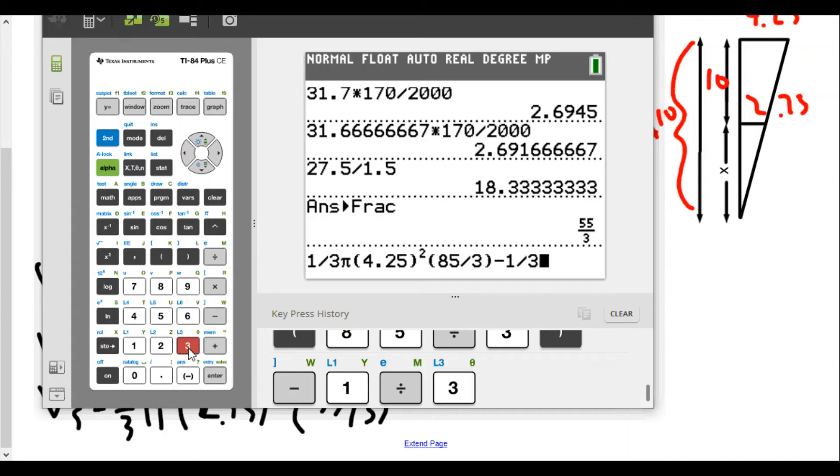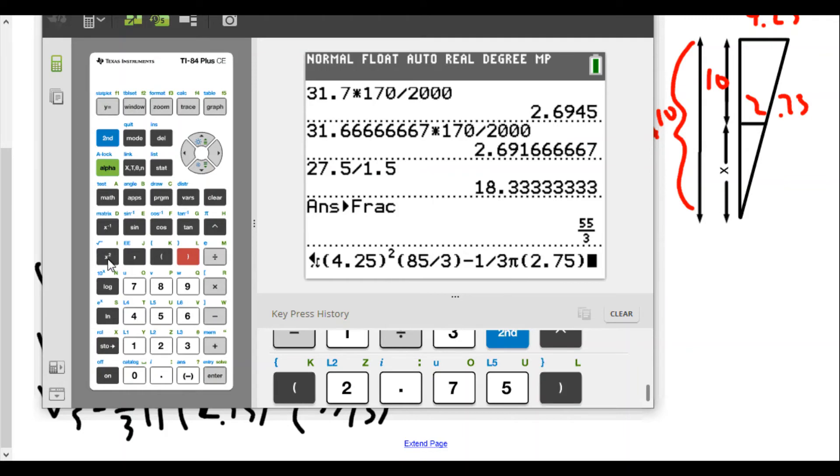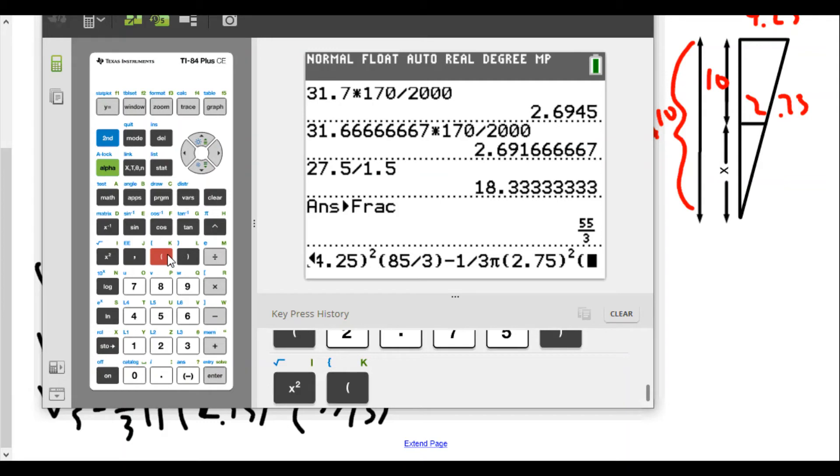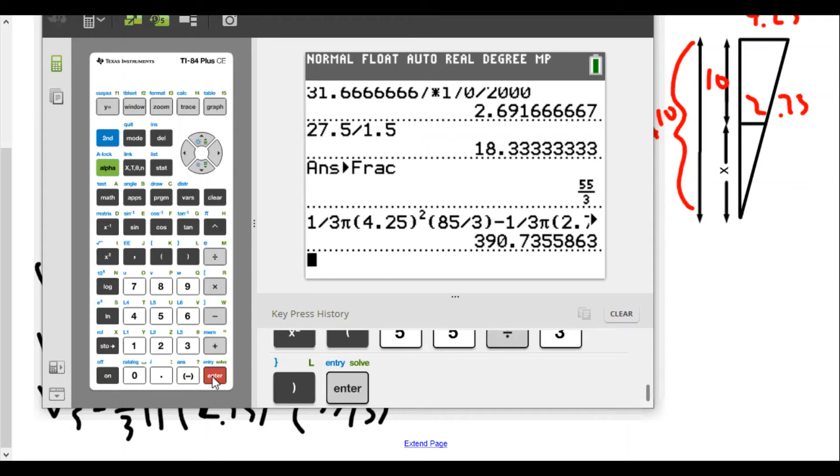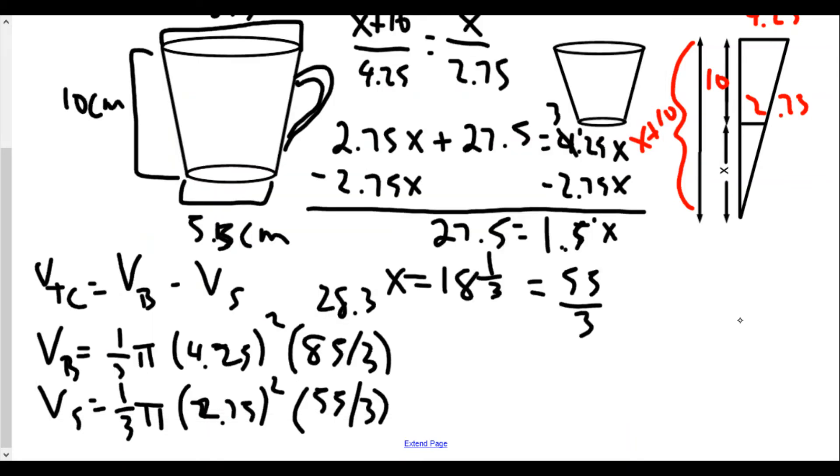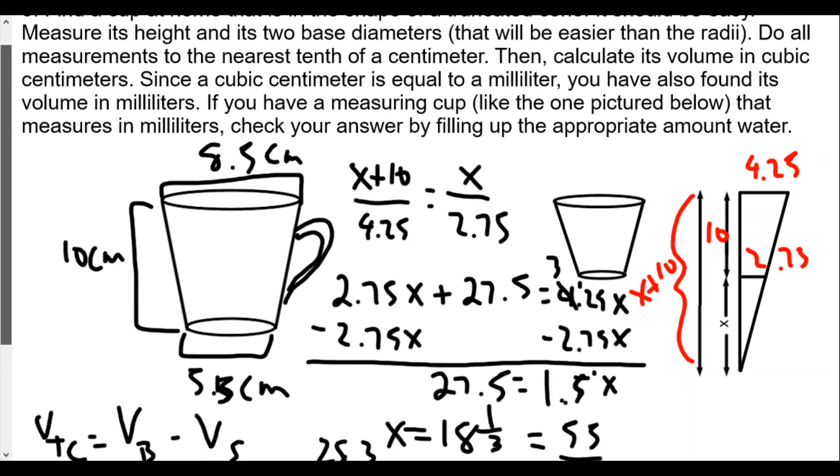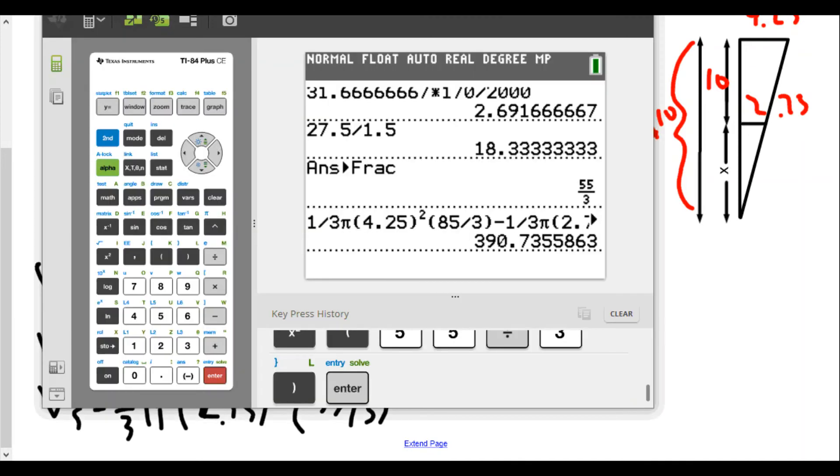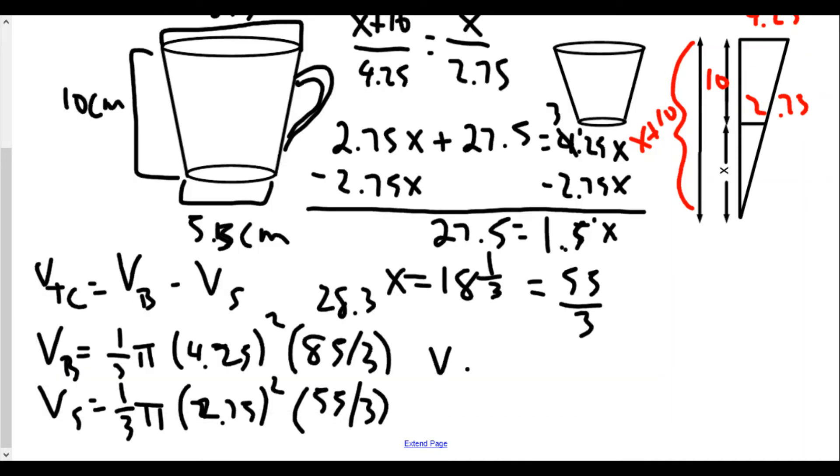Now let's subtract from that one-third. The calculator will be doing everything as far as the order of operations. We have 2.75 squared, and the height is 55 over 3. Enter, and we get 390.735. So to the nearest cubic centimeter, the volume of the truncated cone is approximately 391 cubic centimeters, which equals 391 milliliters.